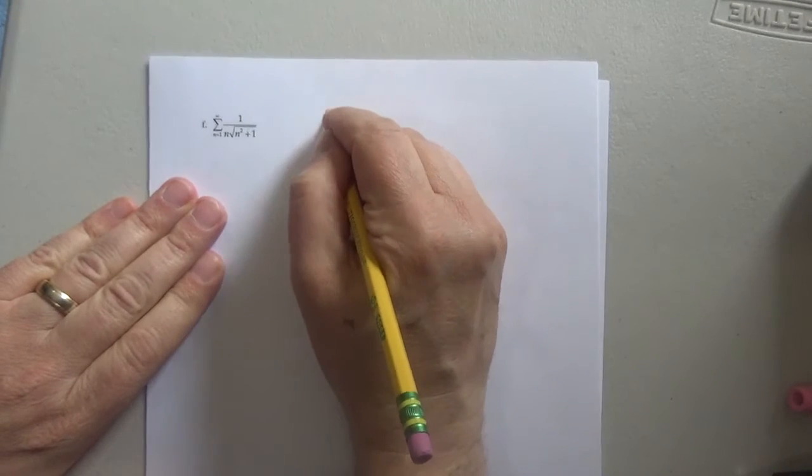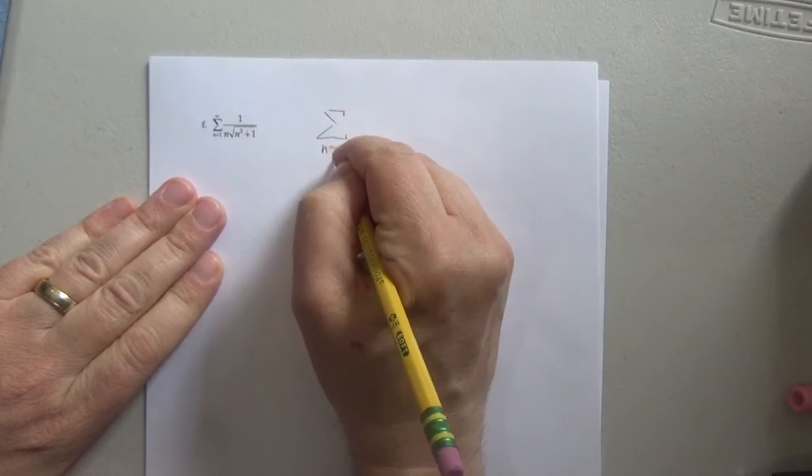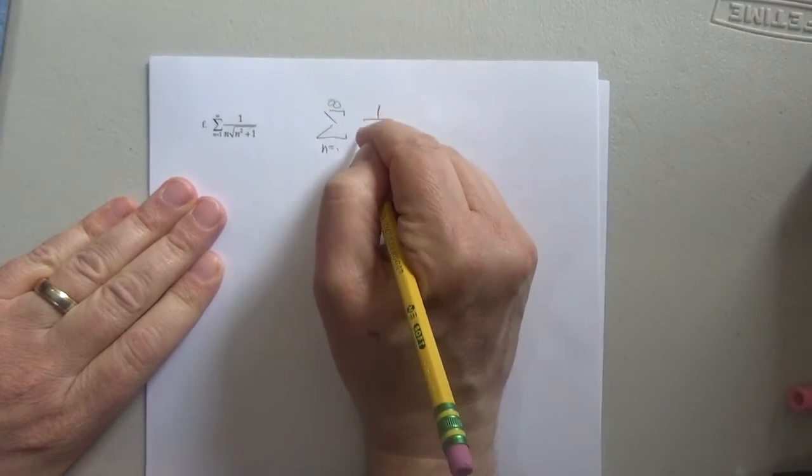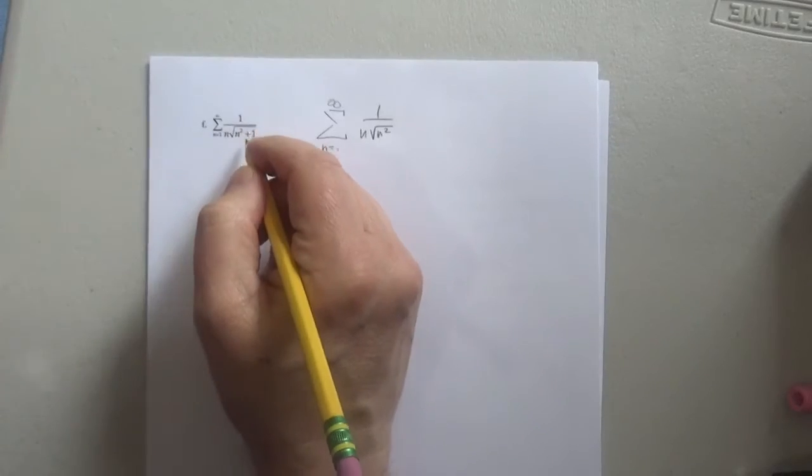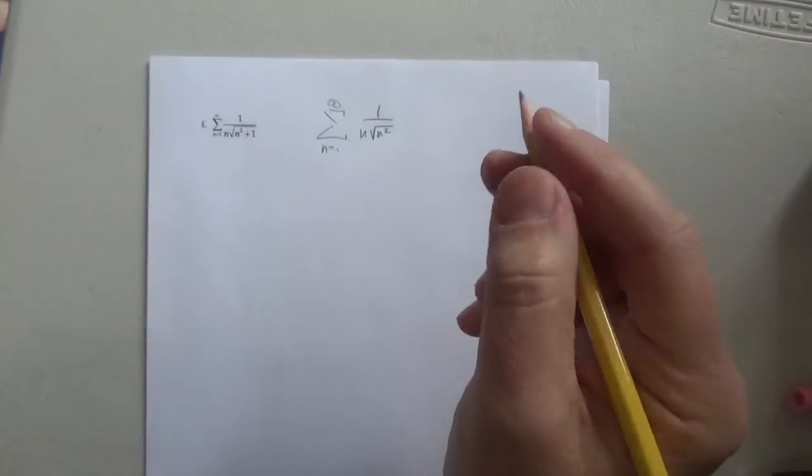So just to figure out what I should work with, I'm going to rewrite this as n equals 1 to infinity, 1 over n times n squared, right? Because the plus 1 is not really much help for the n. n squared's gonna overpower that quite quickly.